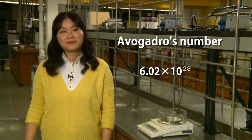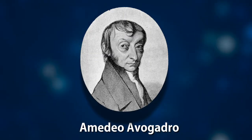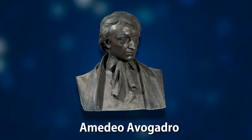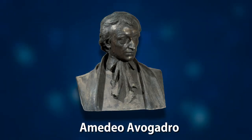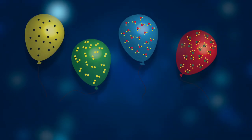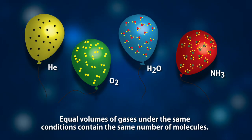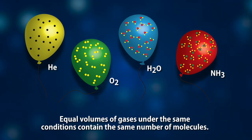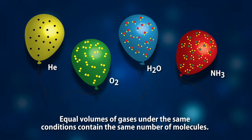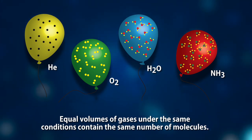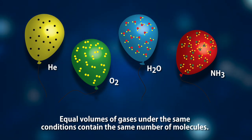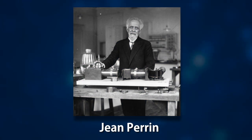This number also goes by the name of Avogadro's number, and now I want to tell you how it got that name. Avogadro's number is named after the early 19th century Italian scientist Amadeo Avogadro, who in 1811 first proposed that equal volumes of gases under the same conditions contain the same number of molecules. This hypothesis proved useful in determining atomic and molecular weights and eventually led to the concept of a mole many years later.